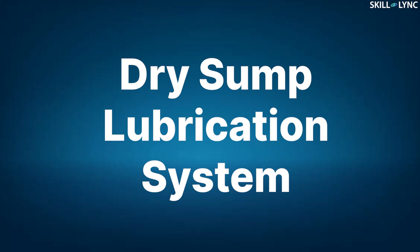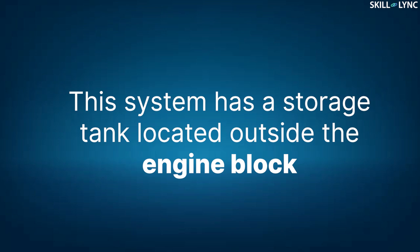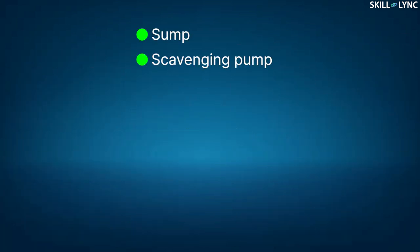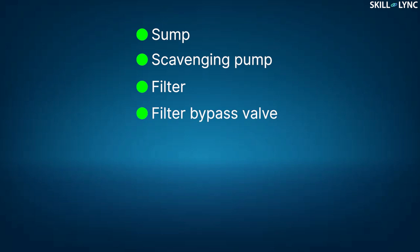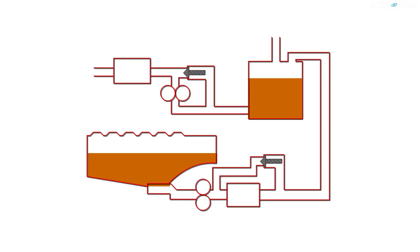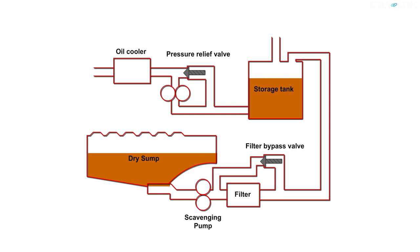Now let's move on to the last type in the main classification: the dry sump lubrication system. This system has a storage tank located outside the engine block. The oil returns to the tank by means of a pump, not by gravity. It consists of a sump, a scavenging pump, a filter, a filter bypass valve, a storage tank, a pressure regulator, an oil cooler, and an oil pump. The oil from the sump is pumped by the scavenging pump, then filtered, and the filtered oil enters the storage tank where it is pumped by the oil pump for lubrication.